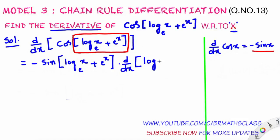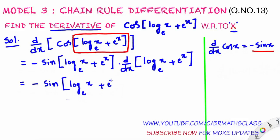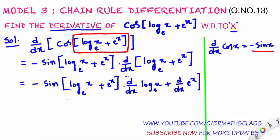Which expression did we imagine as x? Log x base e plus e power x. So that equals minus sin of log x base e plus e power x, into d by dx of log x base e plus e power x. We learned how to differentiate this in basic differentiation. We differentiate each and every function: d by dx of log x base e plus d by dx of e power x. We keep brackets here so there is no confusion.